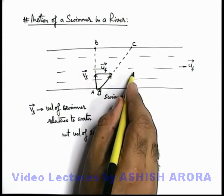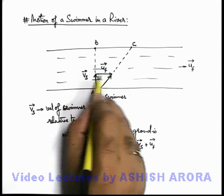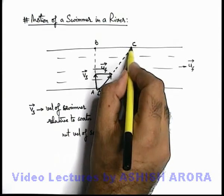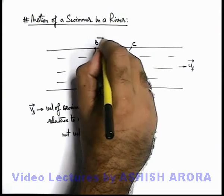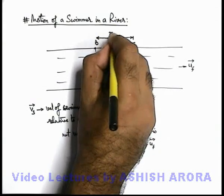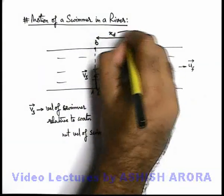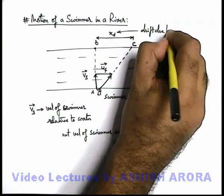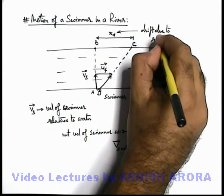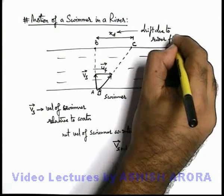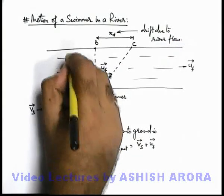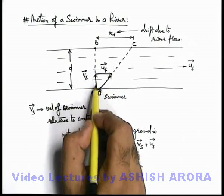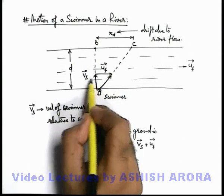The swimmer puts all efforts swimming perpendicular to the river current, but due to the river current he is drifted along with the water and reaches point C. The distance by which he is drifted along the water is called drift due to river flow, denoted as x_d. Now, if the width of the river is d, the swimmer is continuously crossing at speed v_s, so v_s is called the crossing velocity of the swimmer.